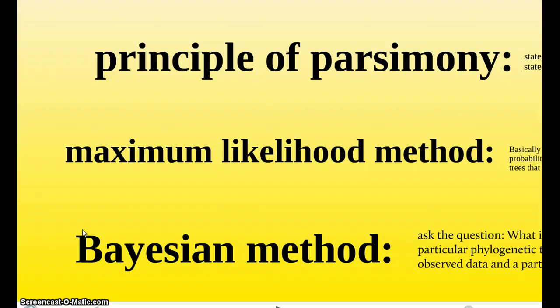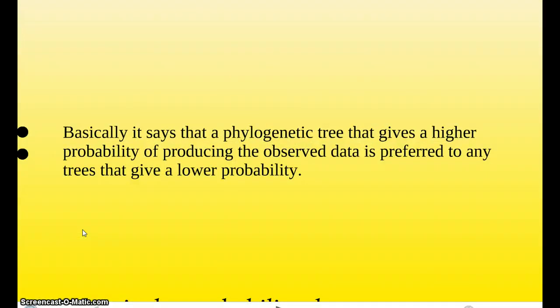The maximum likelihood method. This one's pretty confusing, but I narrowed it down in this presentation. It basically says that a phylogenic tree that gives a higher probability of producing the observed data is preferred to any trees that give a lower probability. So, basically, it's saying the cladogram that is going to produce the observed data better is going to be the one that would be picked over the others.